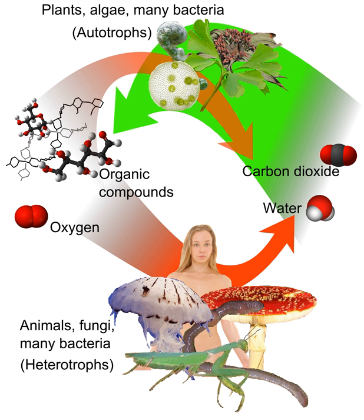Photoorganoheterotrophs, such as Rhodospirillaceae and purple non-sulfur bacteria, synthesize organic compounds using sunlight coupled with oxidation of organic substances, including hydrogen sulfide, elemental sulfur, thiosulfate, and molecular hydrogen. They use organic compounds to build structures. They do not fix carbon dioxide and apparently do not have the Calvin cycle.